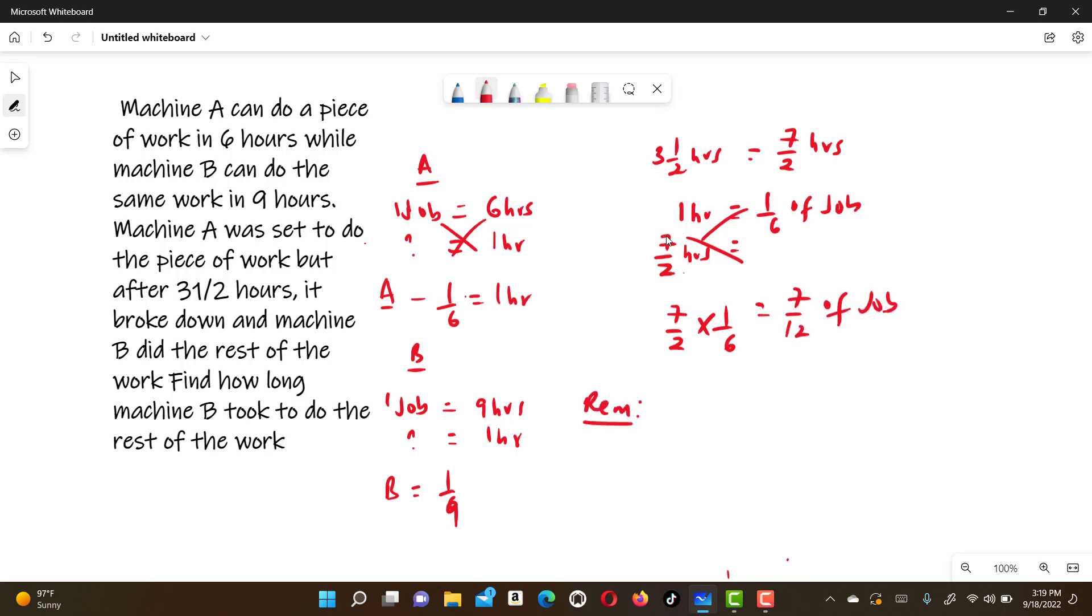So the remaining job is done by machine B. So the question is what fraction of the job remained? The total job is 12 over 12 minus the job that A did, which is seven over 12. This gives us five over 12 of the job.